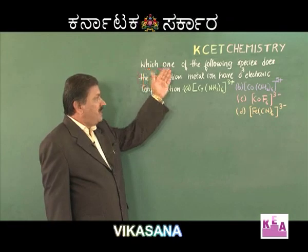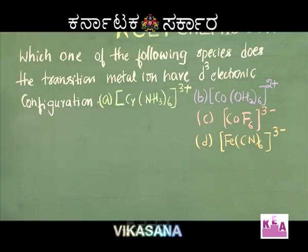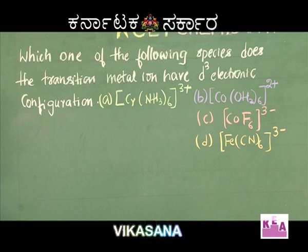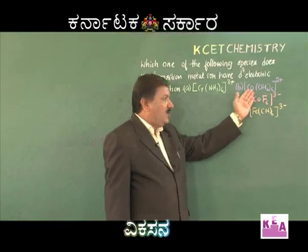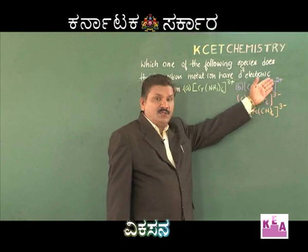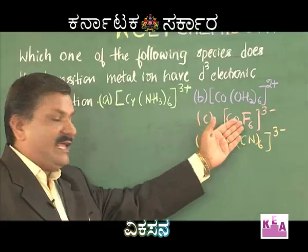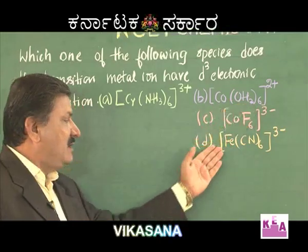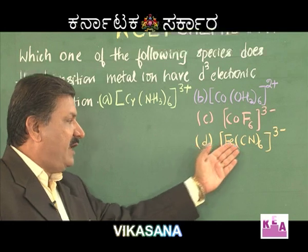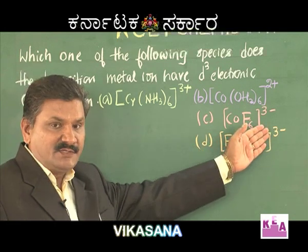Which one of the following species does the transition metal ion have a d³ electronic configuration? The four complex ions are: Cr(NH₃)₆³⁺, Co(H₂O)₆²⁺, CoF₆³⁻, and Fe(CN)₆³⁻.